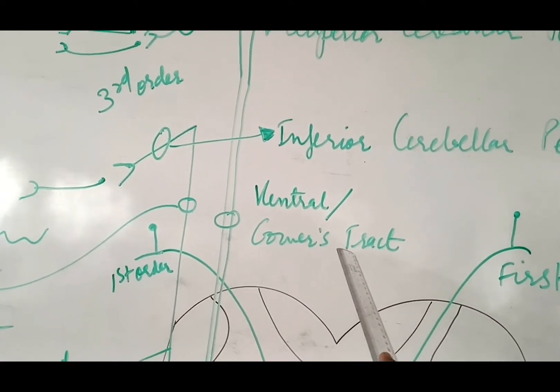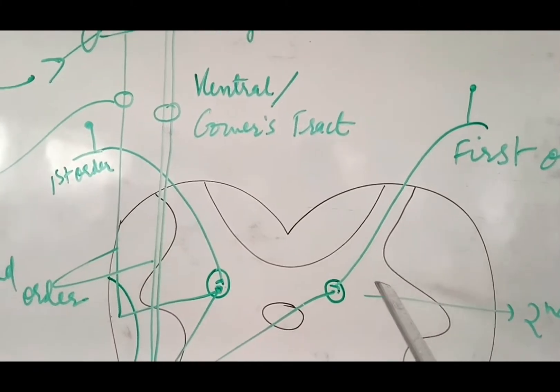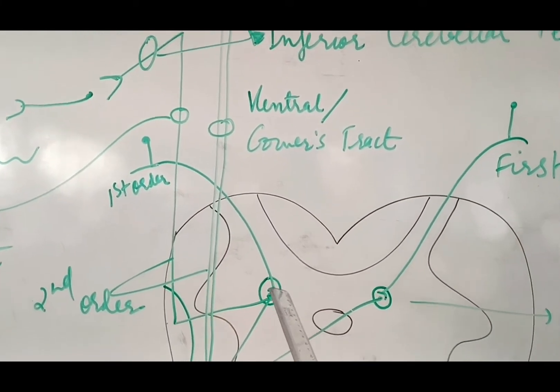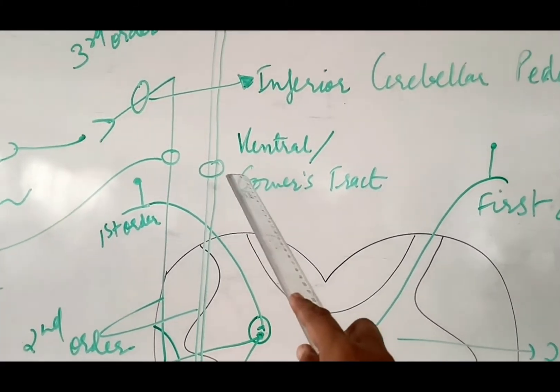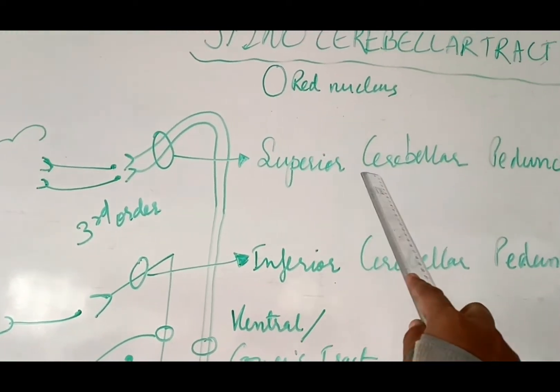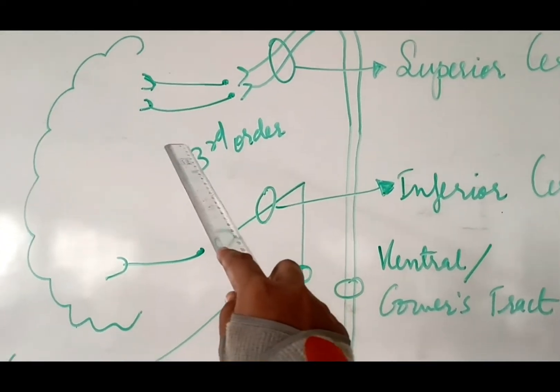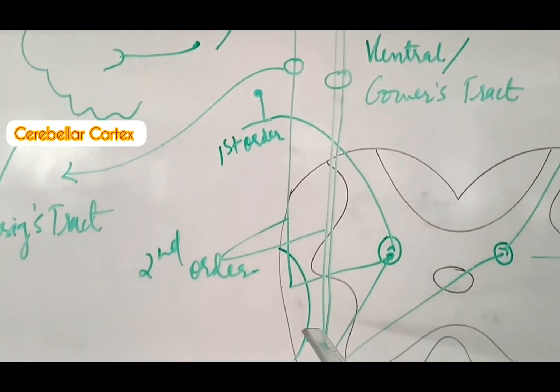So the second order is in the spinal cord only. These are the crossed fibers. Gower's tract reaches upwards till the superior cerebellar peduncle and the vermis where the third order of neuron begins and then it reaches the cerebral cortex. So this is how both the tracts ascend upwards, dorsal having the uncrossed fibers while ventral having both crossed and uncrossed fibers.